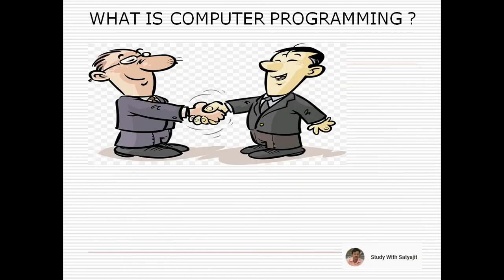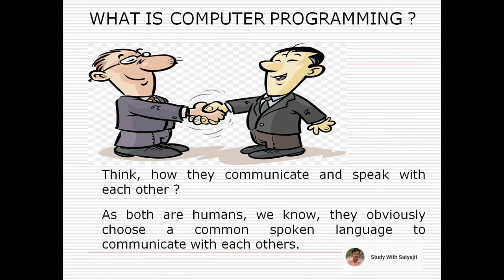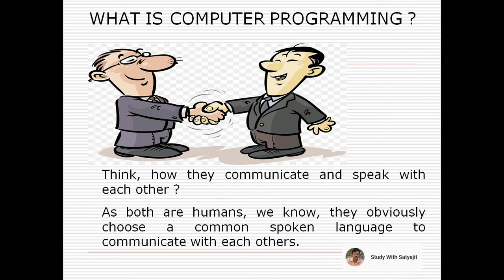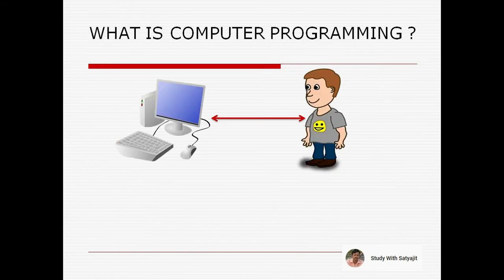Suppose two people, Ram and Sam, want to talk with each other. Think how they communicate and speak with each other. As both are humans, they obviously use a common spoken language to communicate, for example English, Spanish, Hindi, Bengali, or any other languages. But if a human wants to communicate with a computer or any machine, how do they communicate?